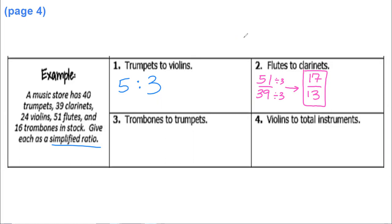Let's keep it going. Next up we're going to do trombones to trumpets. So there are 16 trombones to 40 trumpets. Again, this is not fully simplified. What goes into these numbers? They're both divisible by 2, they're both divisible by 4, they're both divisible by 8. I don't think they're divisible by 16 though, so I'm going to go ahead and divide them by 8 each. So divide by 8. When I do that, 16 divided by 8 is 2, and 40 divided by 8 is 5. So it's a 2 to 5 ratio, trombones to trumpets.